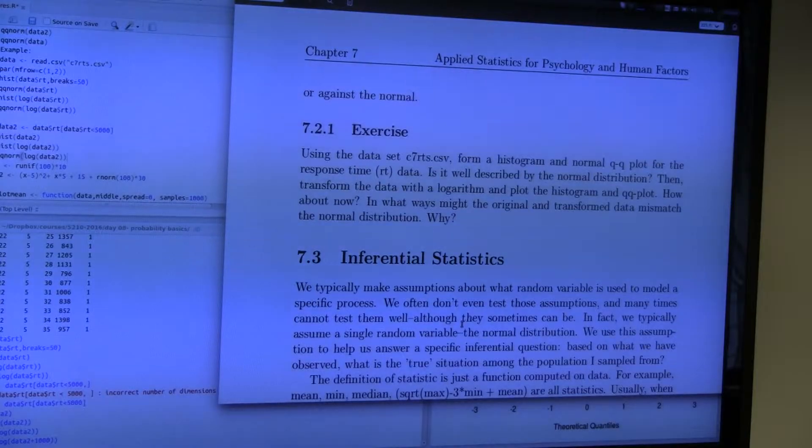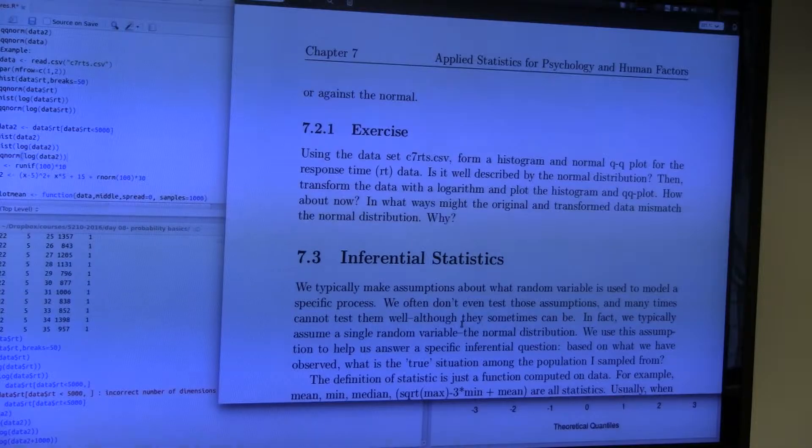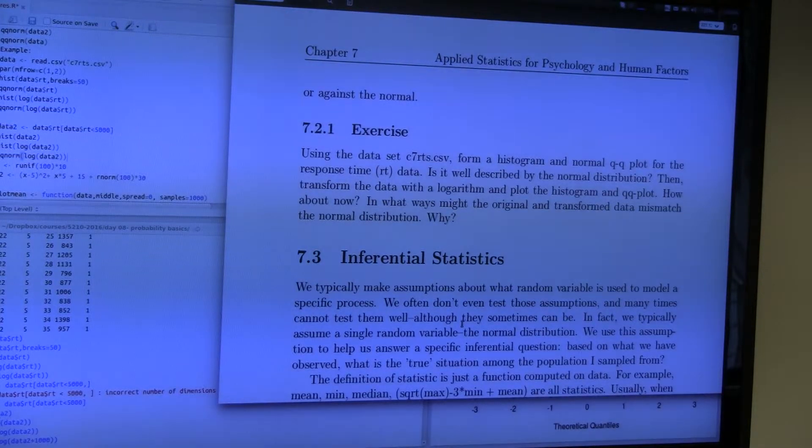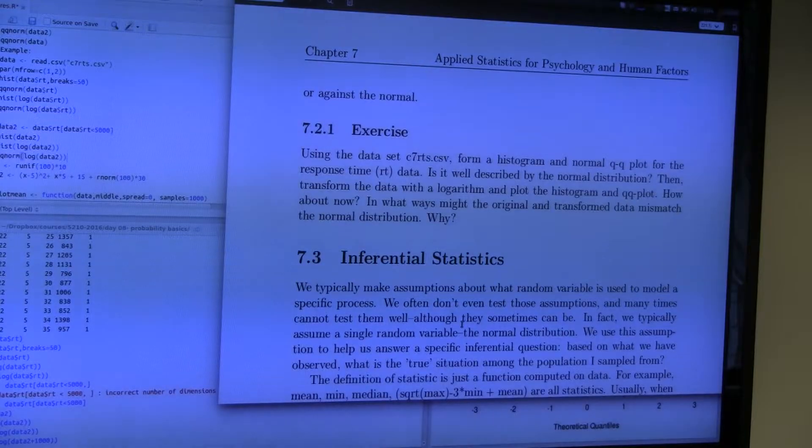To estimate what generated that data, and then ask ourselves what can we infer about the true population based on what we observed. So that's what inferential statistics are, and the first step of inferential statistics is parameter estimation.